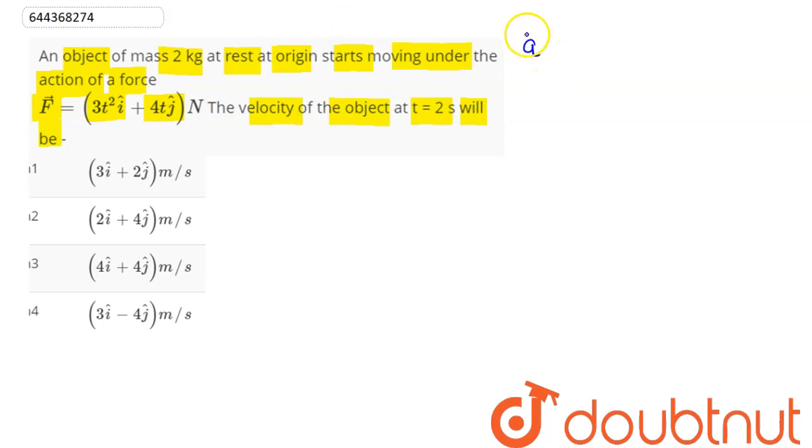So, acceleration here will be equal to force divided by mass. Force here is given as 3t² i cap plus 4t j cap divided by mass, which is given as 2 kg.